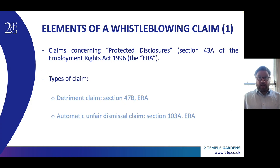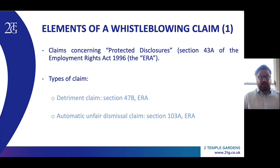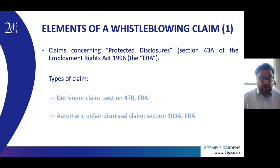As for the elements of a whistleblowing claim, the first thing to note is that a whistleblowing claim is not so much a claim in and of itself, but rather a phrase commonly used to describe the five causes of action pertaining to what are called protected disclosures as defined by section 43A of the Employment Rights Act 1996. The two main causes of action pertaining to protected disclosures are, first, detriment claims brought under section 47B of the ERA, by which a worker has the right not to be subjected to any detriment by any act or any deliberate failure to act by their employer,